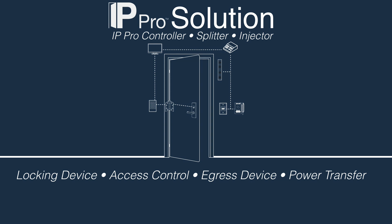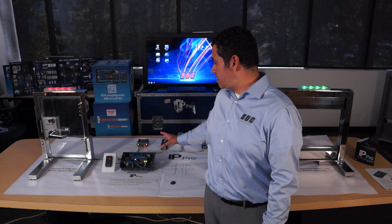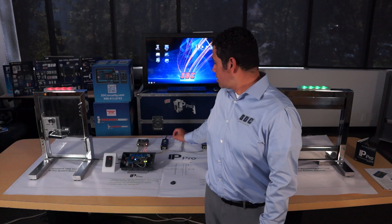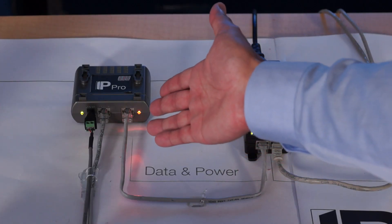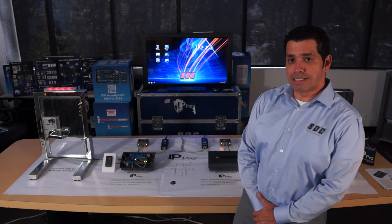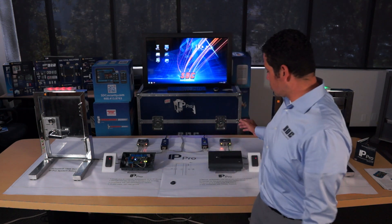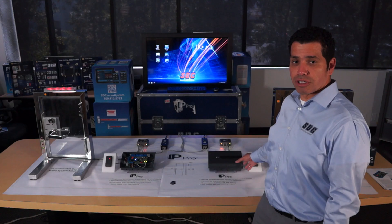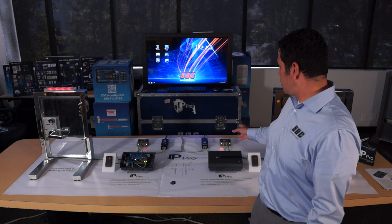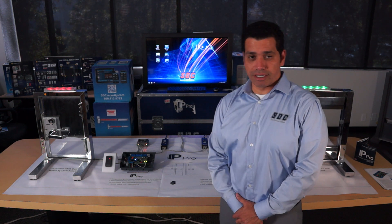We have our IP Pro starter kit which consists of the IP Pro single door controller, the IP Pro injector, and the IP Pro splitter. The starter kit is available as just the PC board or as a board with enclosure, and it also includes one injector and one splitter.